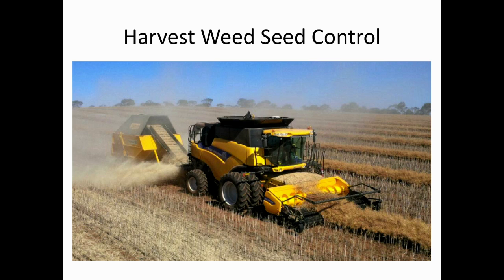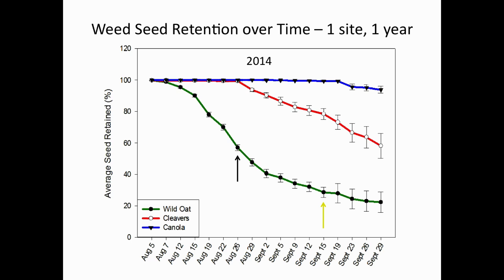How well does harvest weed seed control work—what is the potential? We're just starting new studies on that in western Canada. We'll have a Harrington Seed Destructor here next harvest, but we're doing studies prior to that to see which weeds are most likely to be influenced by it. Here we're looking at three weeds—wild oat, cleavers, and canola—measuring weed seed retention, because only weeds retained on the plant and getting into the combine can be effectively controlled.